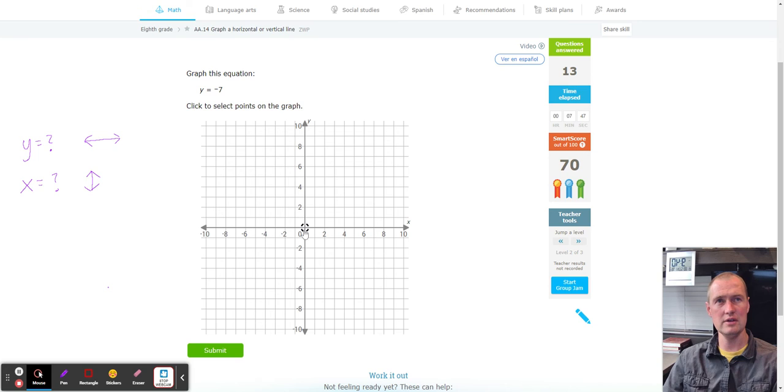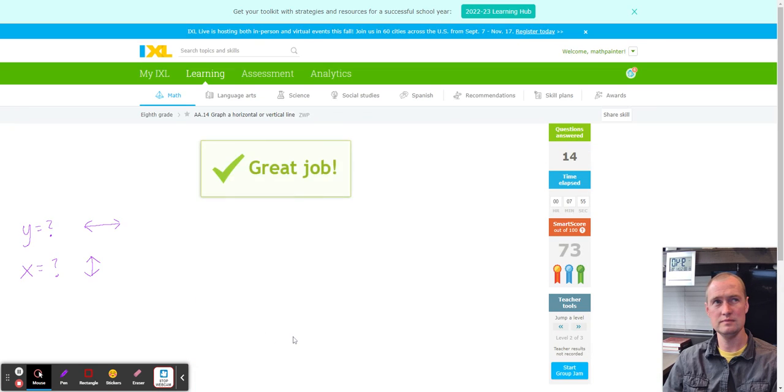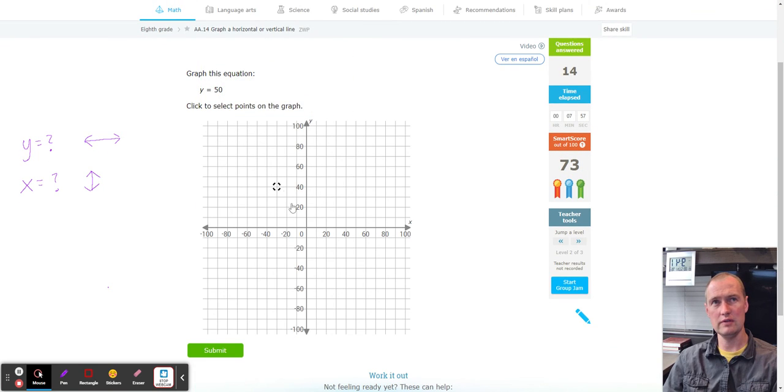Next, Y equals negative seven, negative one, negative two, negative three, negative four, negative five, negative six, negative seven there. Make it horizontal there. Next up, Y equals 50, 10, 20, 30, 40, 50. Make it horizontal.